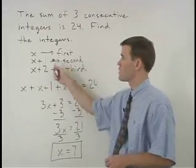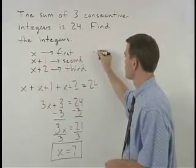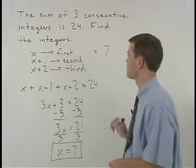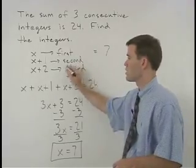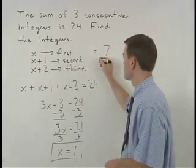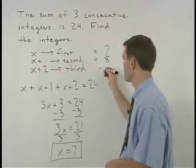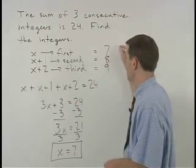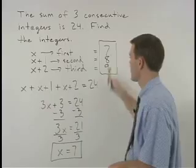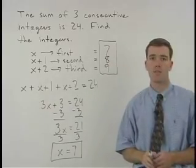So our first integer, x equals 7. Our second integer, x plus 1, would then equal 8. And our third integer, x plus 2, would be 9. So our answers are 7, 8, and 9.